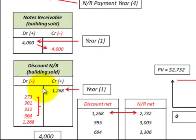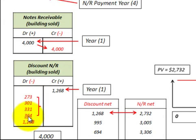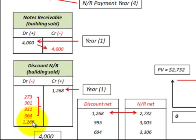Let's look at that balancing entry for those interest earned. We record our interest earned for each of those four years as a reduction to our discount on notes receivable. So at the end of the fourth year, we'd have a zero balance in our discount to notes receivable — a debit balance of $1,268 opposed to the credit balance of $1,268 gives us a zero balance.